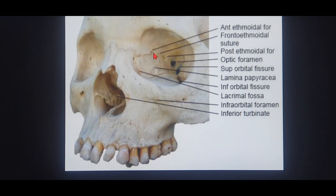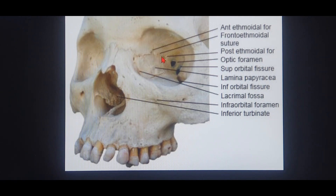The anterior lacrimal crest to the anterior ethmoidal foramen is 24 mm, which is roughly 2.4 centimeters. From the anterior ethmoidal foramen, 12 mm — roughly 1.2 centimeters — posteriorly is the posterior ethmoidal foramen. So the distance between the anterior and posterior ethmoidal canals is roughly 1.2 centimeters. Then, from the posterior ethmoidal foramen, another 6 mm — roughly 0.6 centimeters — posteriorly, you will find the optic nerve prominence and optic canal in the sphenoid region.